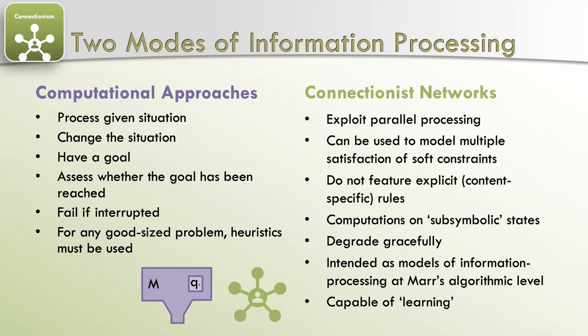Connectionist system is almost the opposite of all of this. So it's not a serial processing system. You can have multiple things processed at the same time. And in fact, that's necessary. There's something called soft constraints rather than hard rules. There's sub-symbolic states, which is going to be an issue for representation. A couple of videos ago, we were talking about what it is to represent something. Connectionist systems represent in a strange way, which will be the subject of the next lecture, not this one.